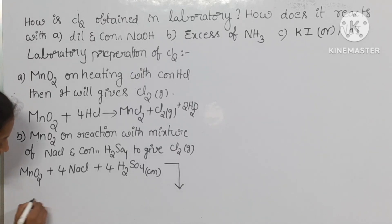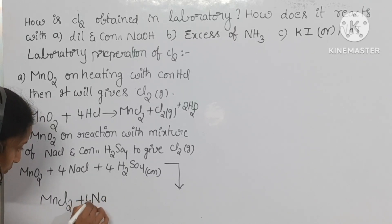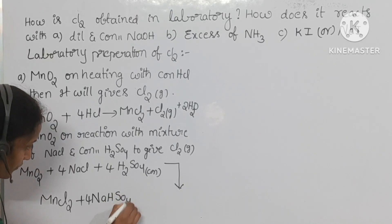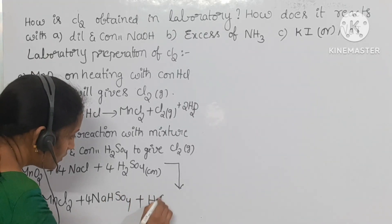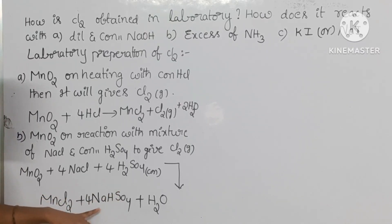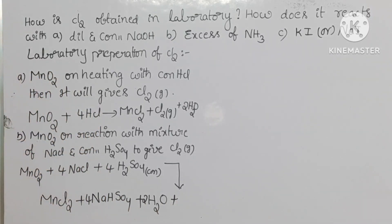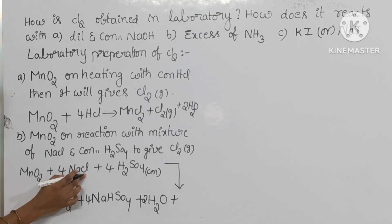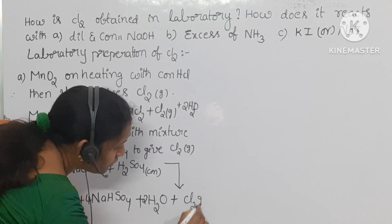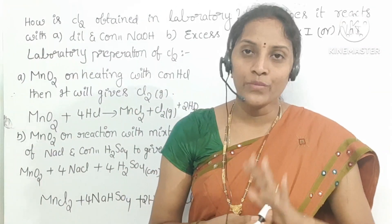One mole of MnO2 reacts with four moles of NaCl and four moles of concentrated H2SO4. The products are manganese dichloride MnCl2, four moles of NaHSO4 (sodium bisulfate), two water molecules, and Cl2 gas. One manganese goes out as MnCl2, the remaining two chlorines form Cl2 gas. These are the two laboratory preparation methods for chlorine.